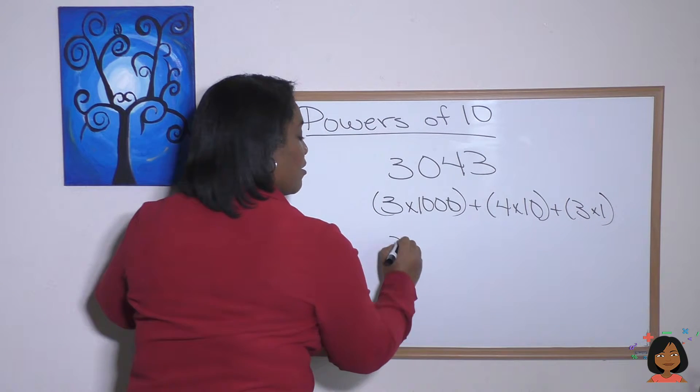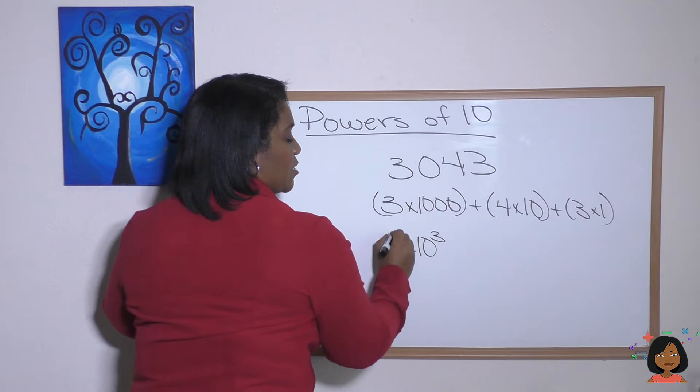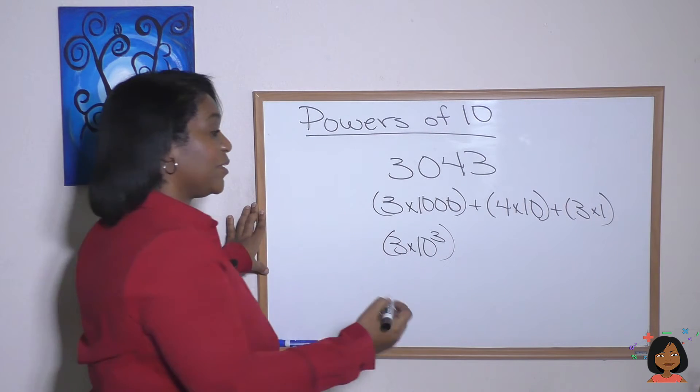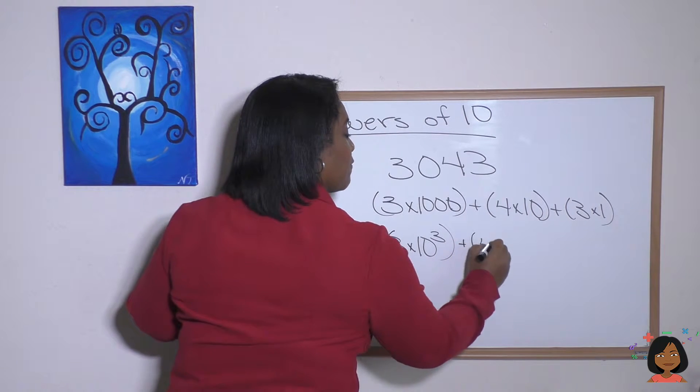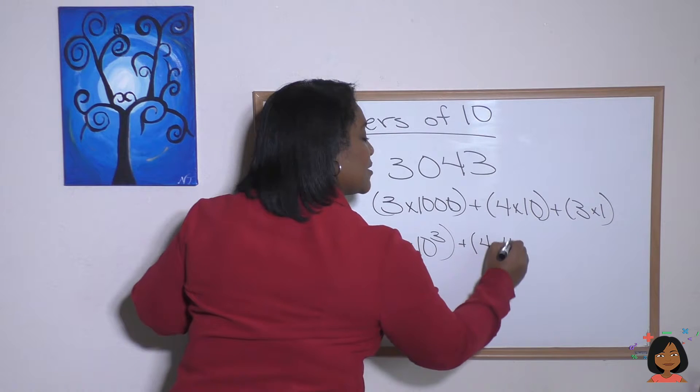So expanded notation for this number would be 3 times 1,000, because it's in the thousands place. Then we would add 4 times 10 plus 3 times 1. Okay, let's use powers of 10 this time. So we would say 3 times 10. It's got 3 zeros, so 10 to the third, plus 4 times, it's got 1 zero, so that would be 10 to the 1,